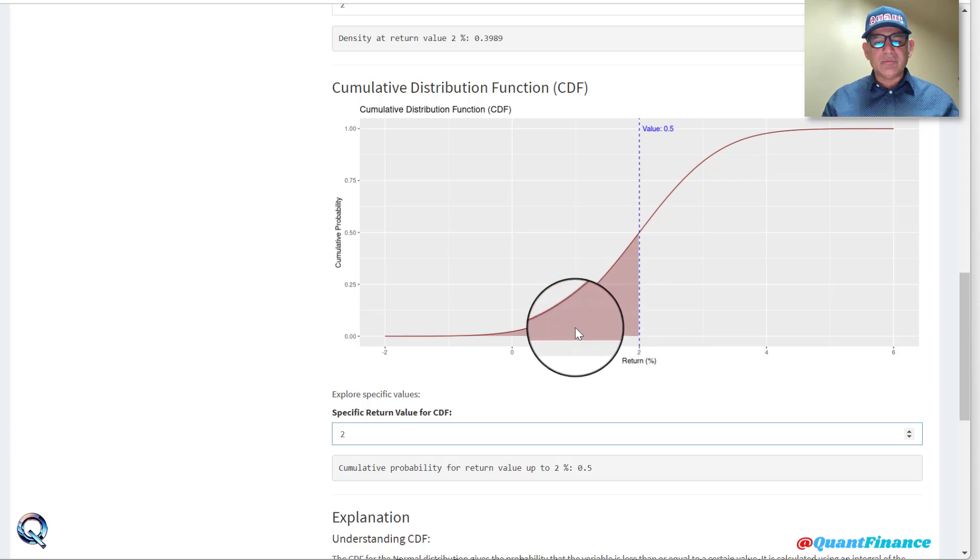So this is all cumulative. This is shaded in the CDF plot also, so this is cumulative up to two percent. CDF gives us this cumulative probability at a particular point or less than that.